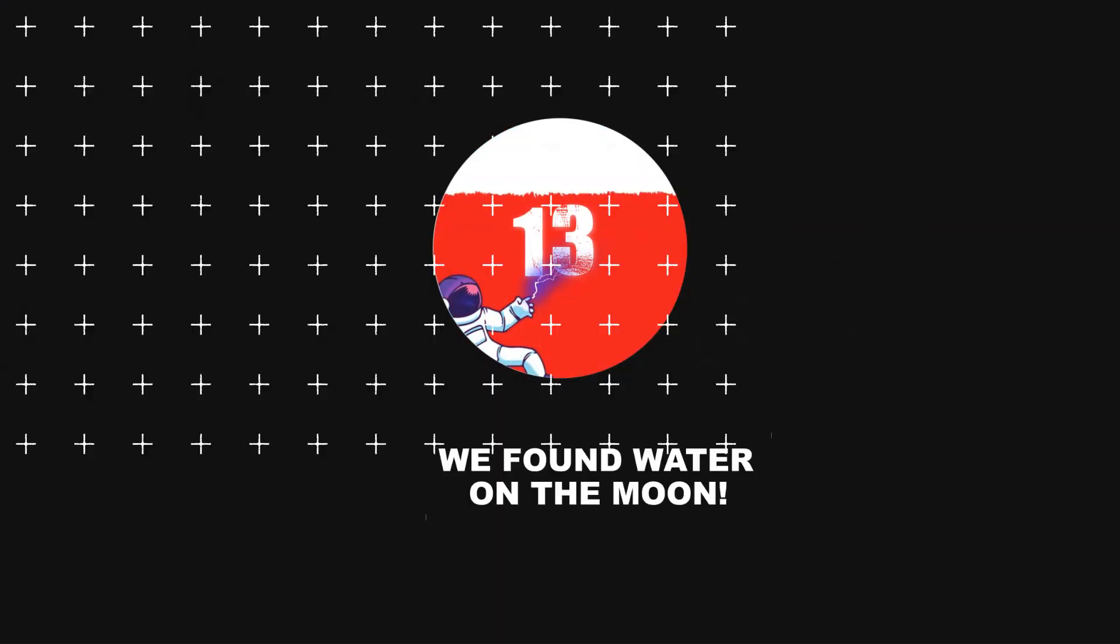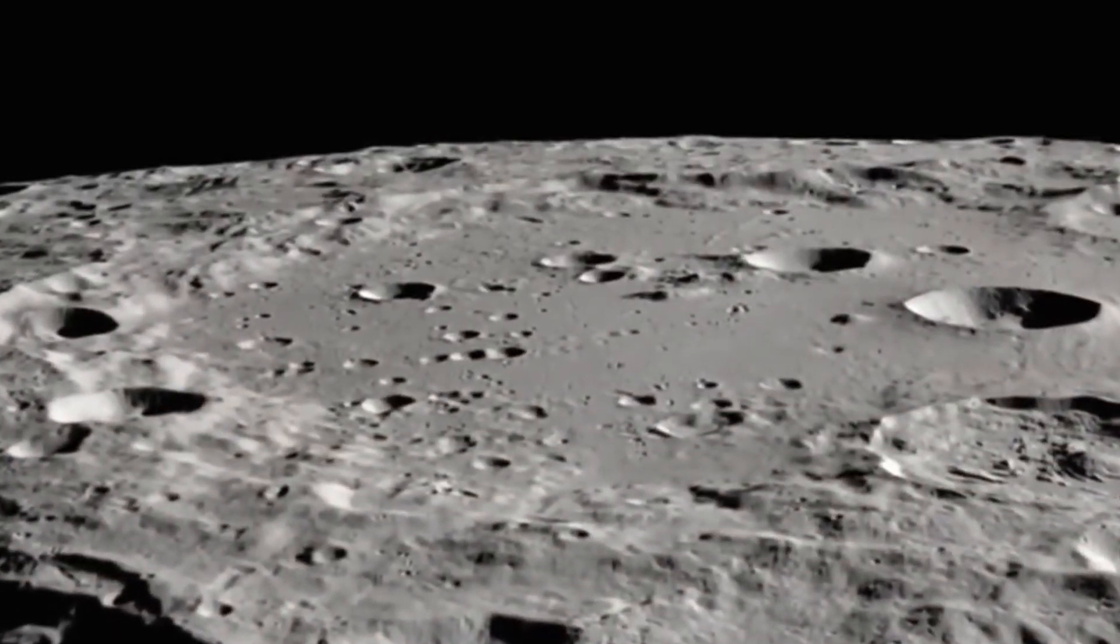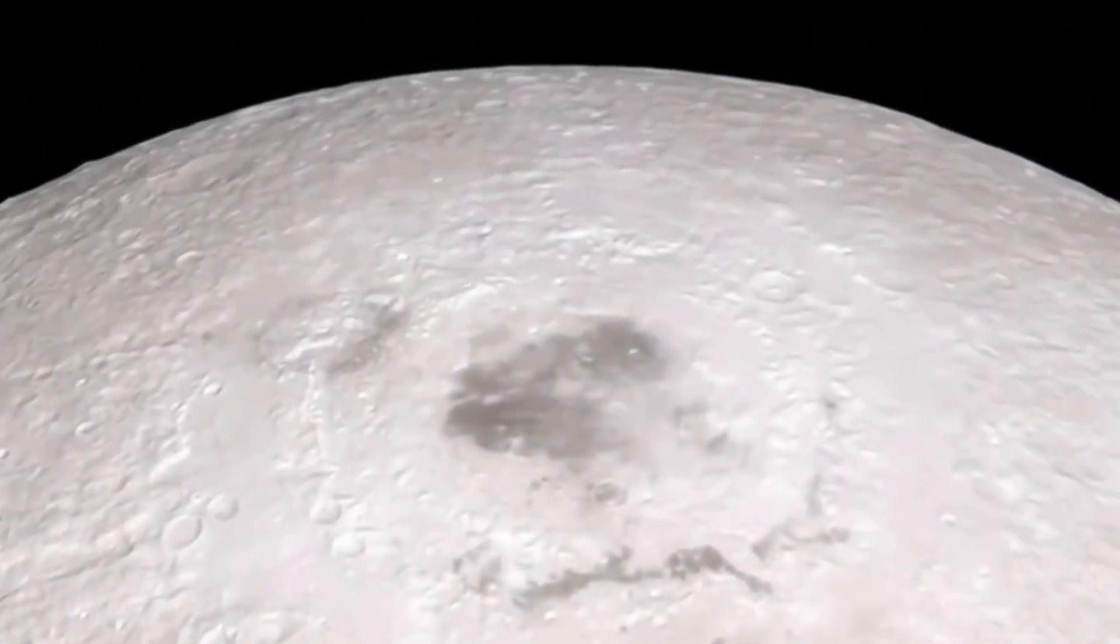Number 13: We found water on the Moon. Yes, we did, in the form of ice trapped within dust and minerals on and under the surface.